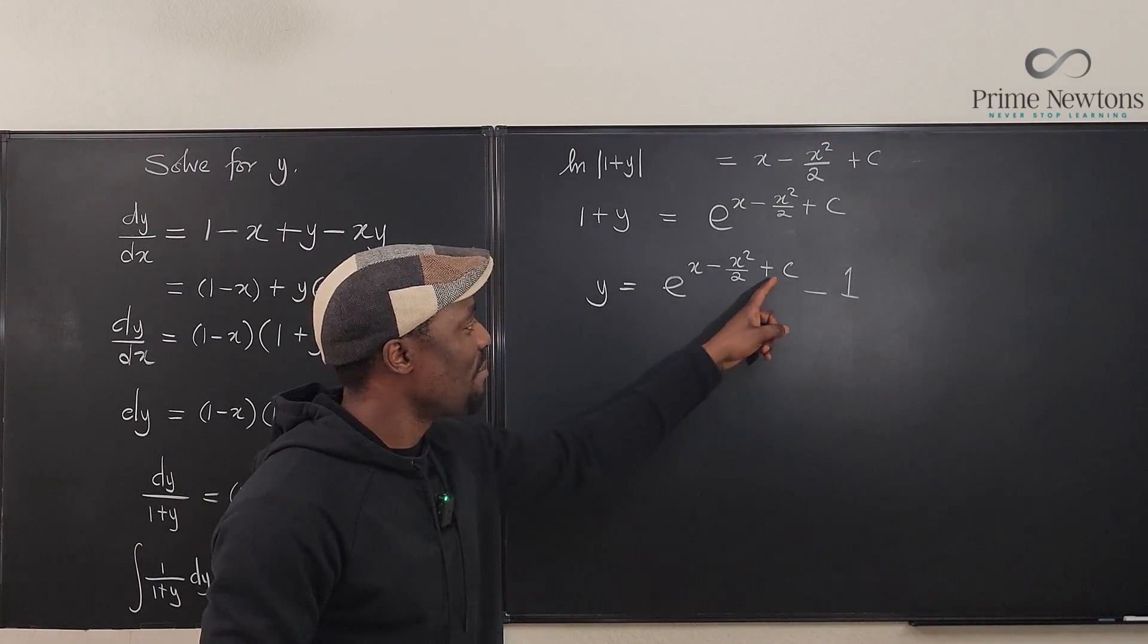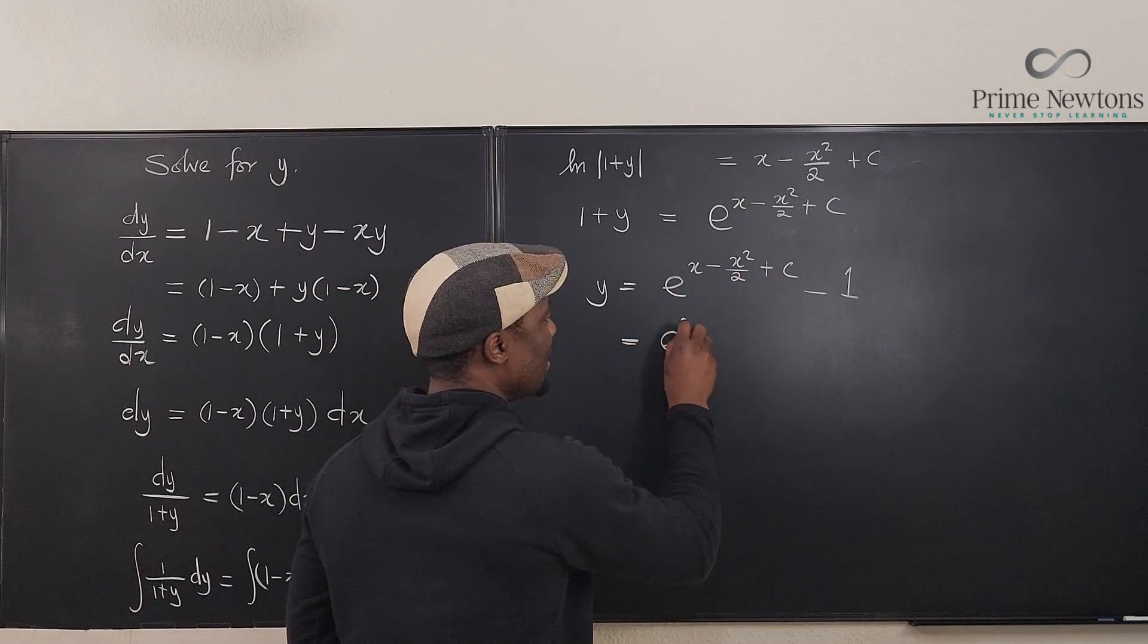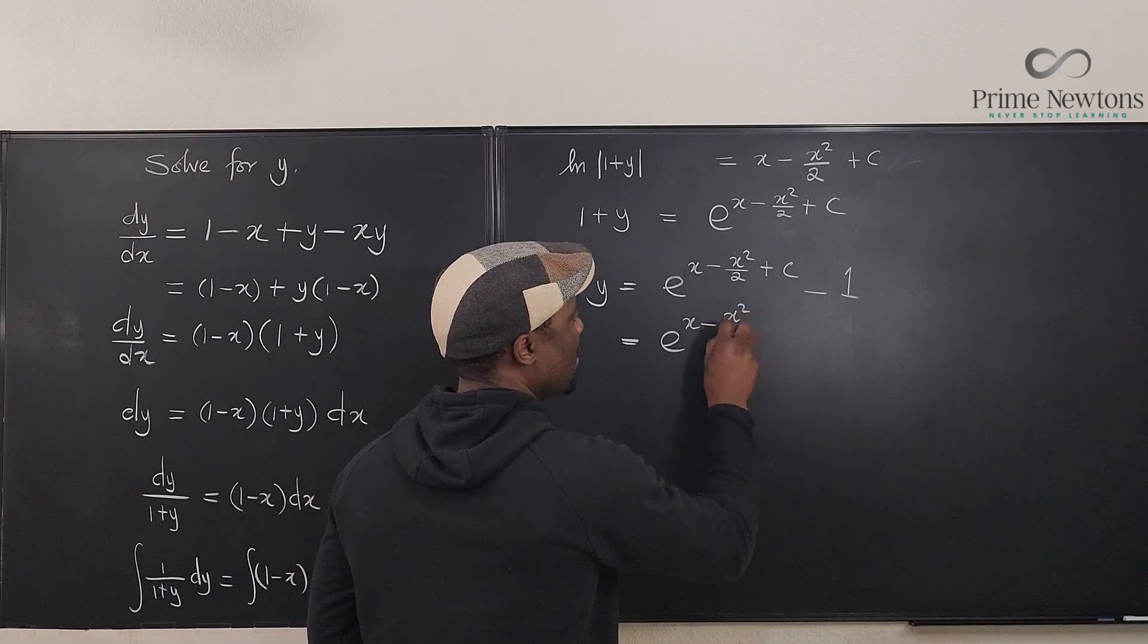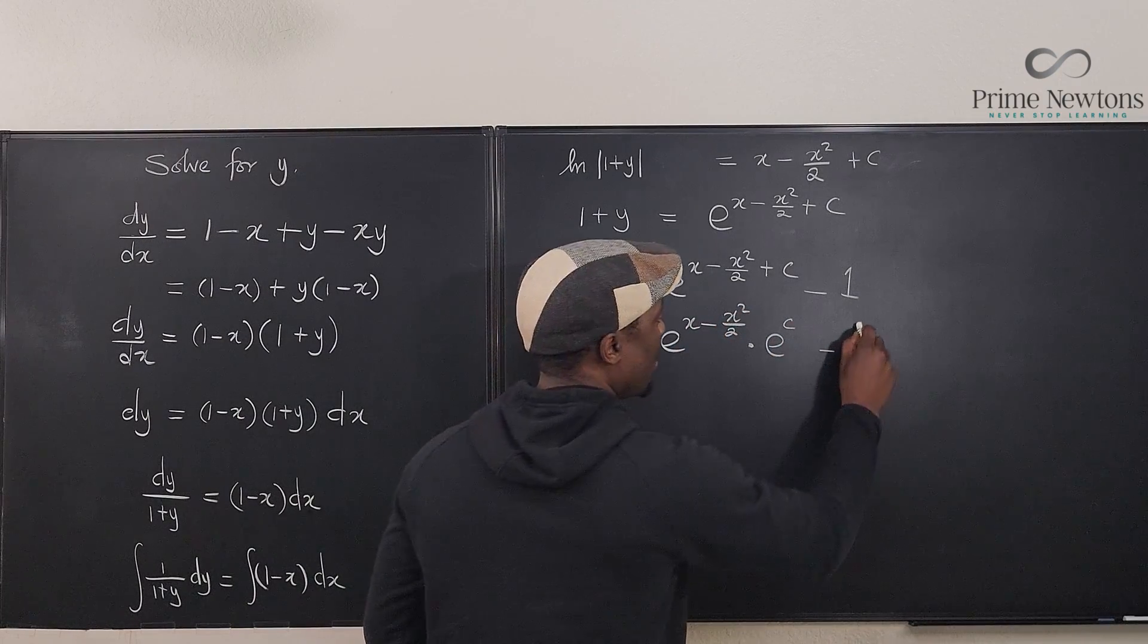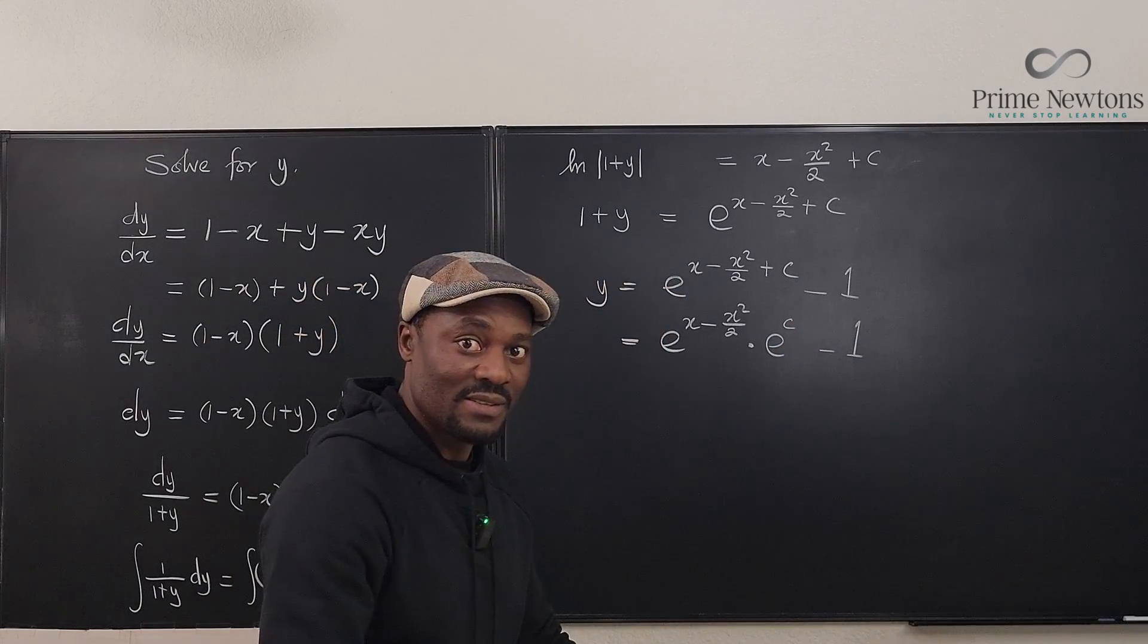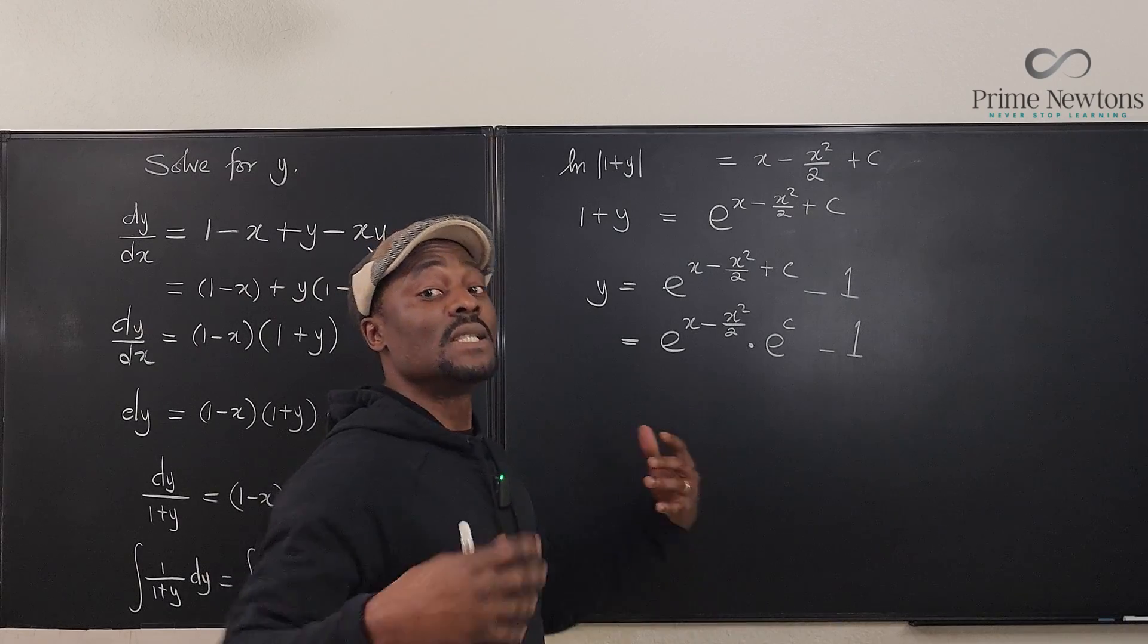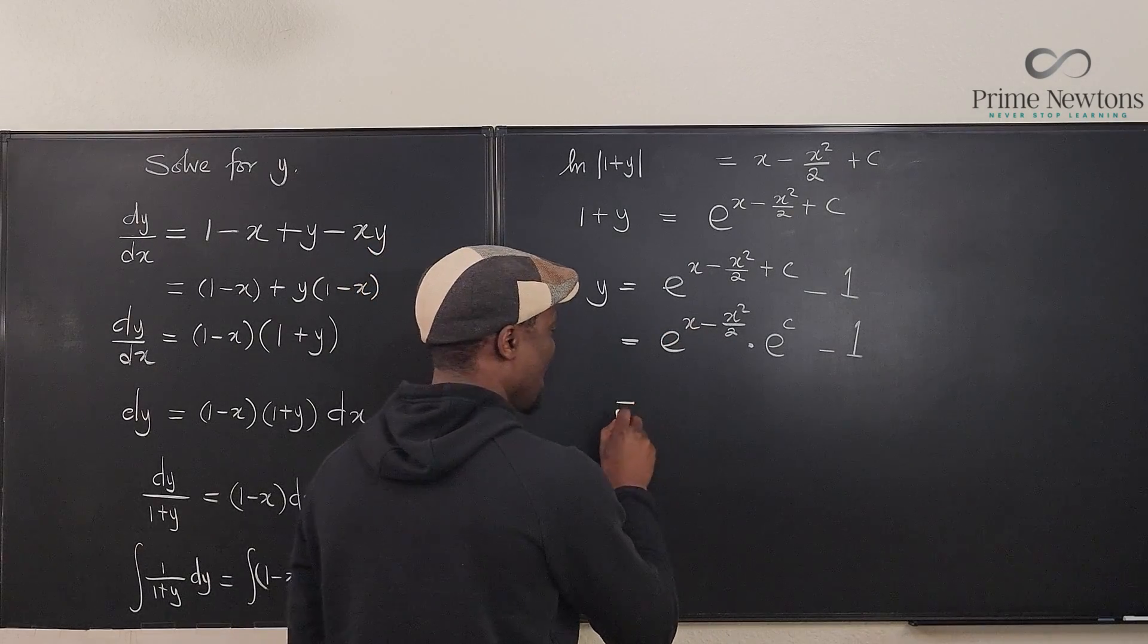Remember that you could write this as e to the (x minus x squared over 2) times e to the c minus 1. Now this e to the c is another constant, which I can ultimately call another c, or just give it another name. I'll call it c1.